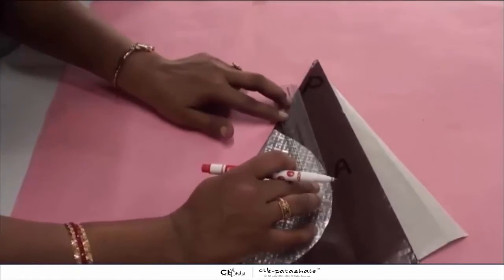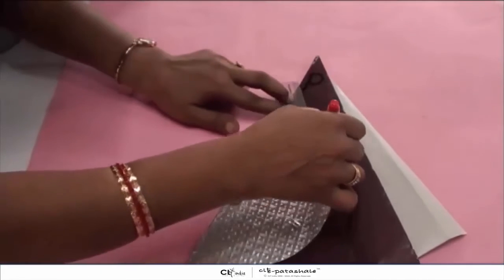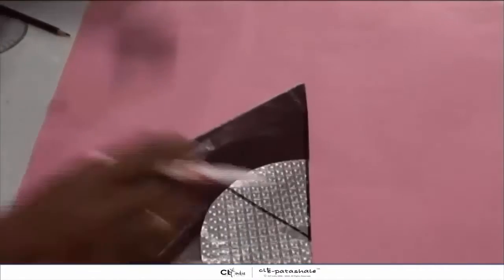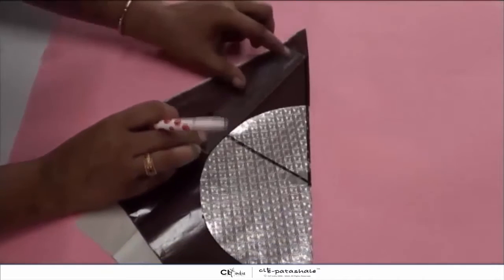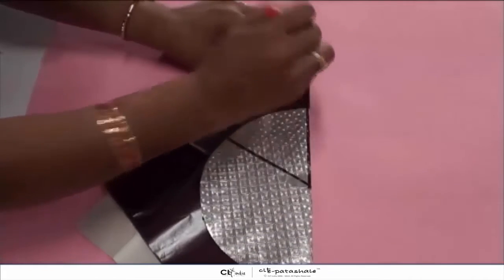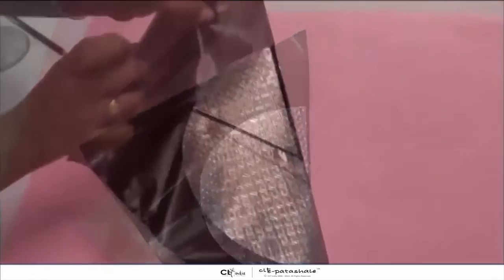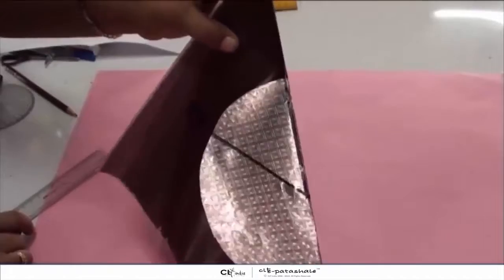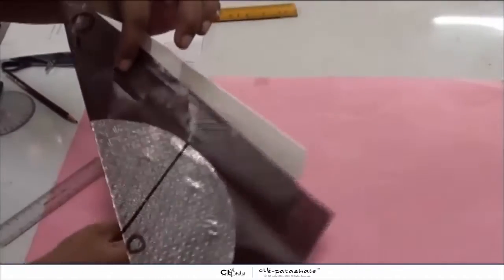So this is our first triangle, OPA, and then we have another triangle OPB. Now if you observe carefully, triangle OPA and triangle OPB completely cover each other.